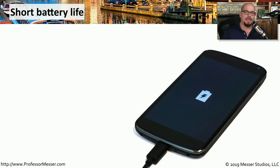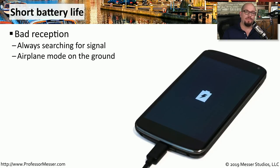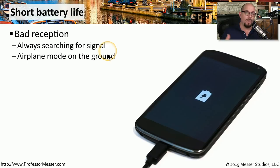We rely on the batteries inside our mobile devices to keep us connected when we may not be near a power source. If your battery life is shorter than expected, there may be some things you can do. If your phone is in an area with very bad reception, the battery will drain faster because the device is constantly searching for a signal using the radio. This might be a situation where you enable airplane mode to conserve battery while away from the mobile network.